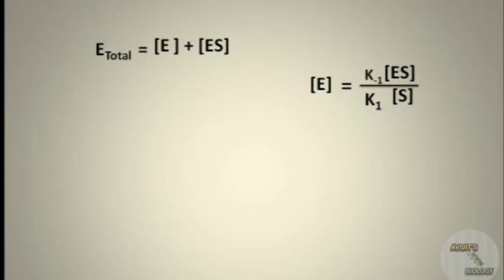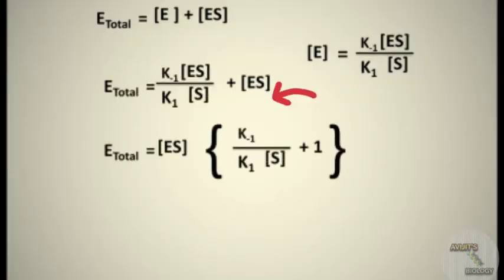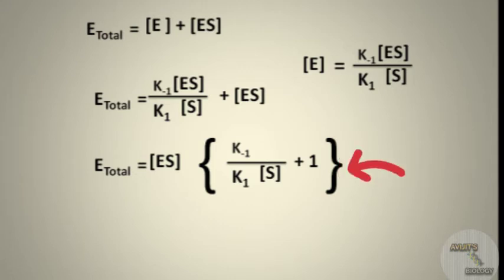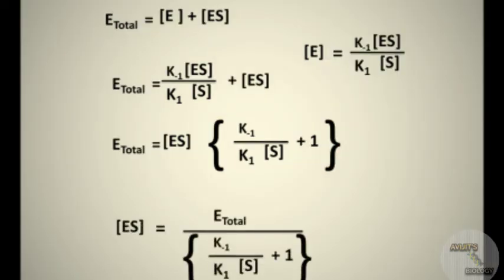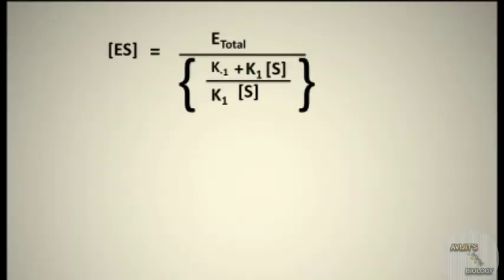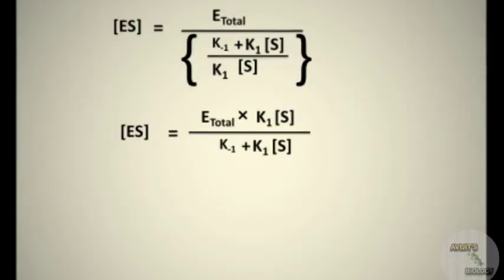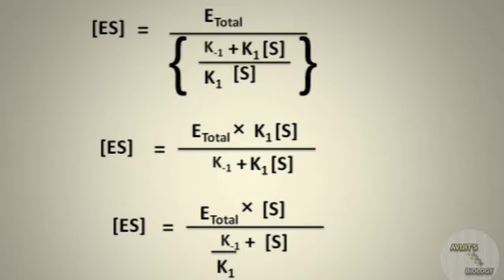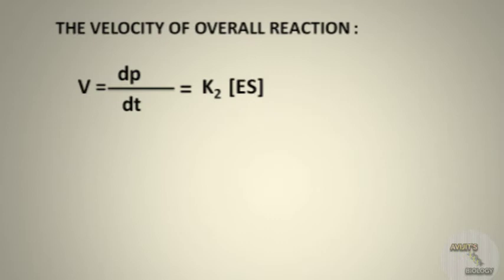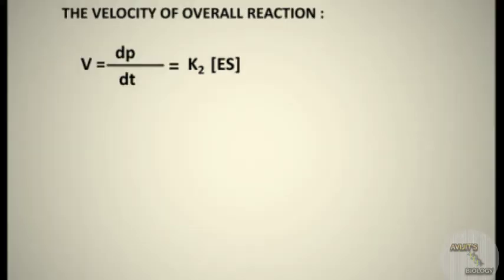Substituting [E] into the E total equation and taking [ES] as common, we can solve for [ES]. Adding the elements of the denominator, then multiplying k1·[S] by E total, and dividing both numerator and denominator by k1, we arrive at the expression for [ES]. The velocity of the overall reaction V equals dp/dt, which equals k2 times [ES].